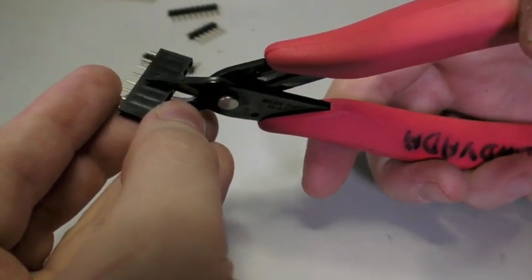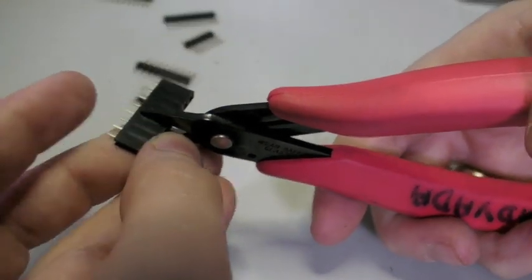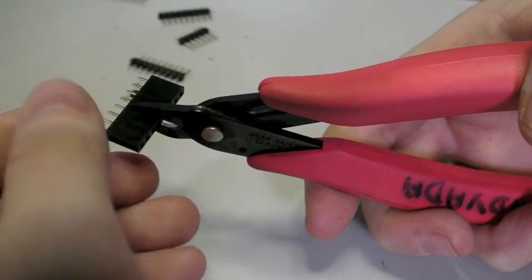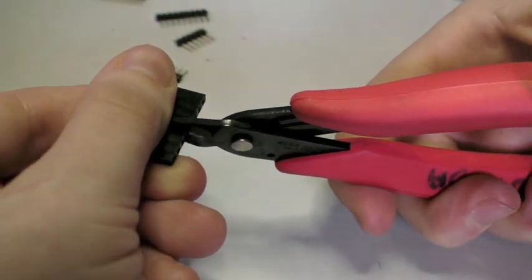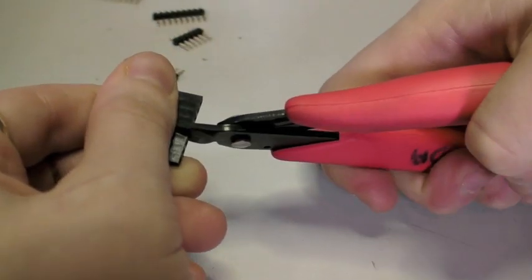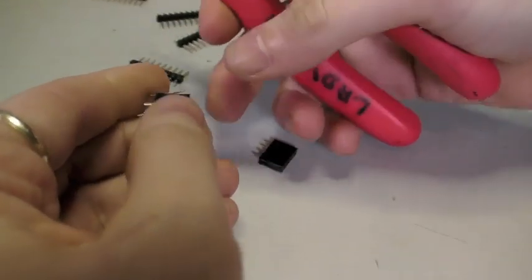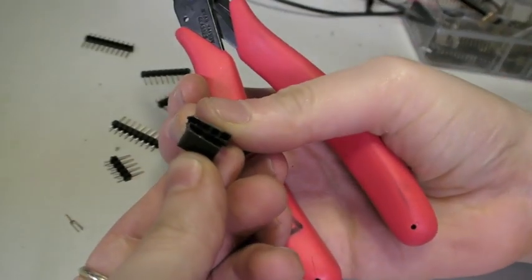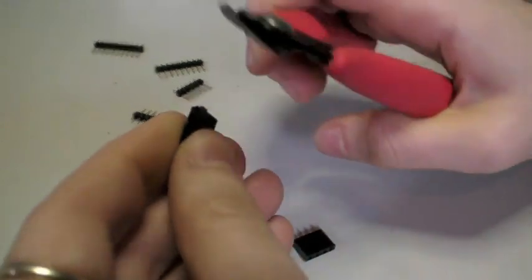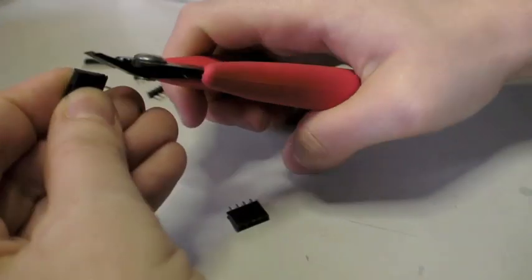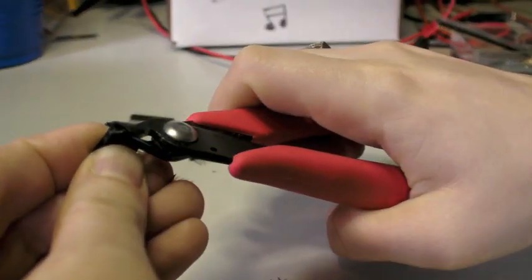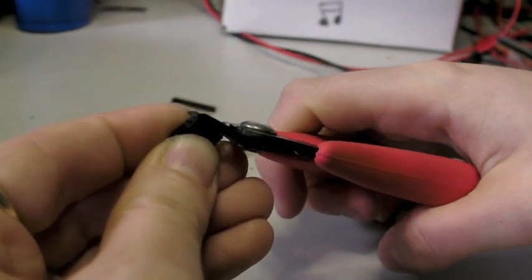So center the cutters right on one pin. That's going to make it. So then we have two pieces. And then you can clean it up with the diagonal cutters.